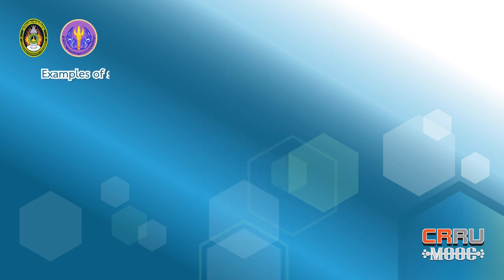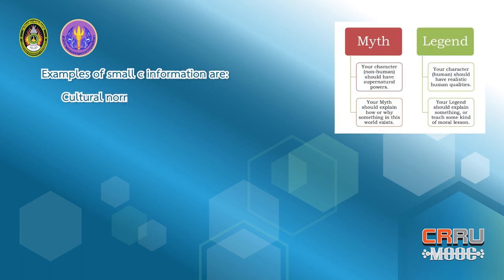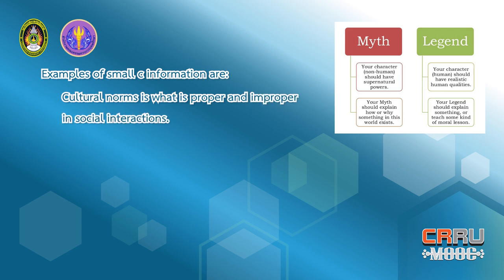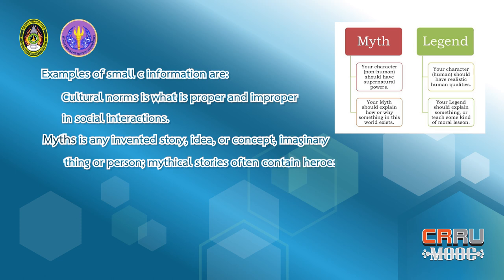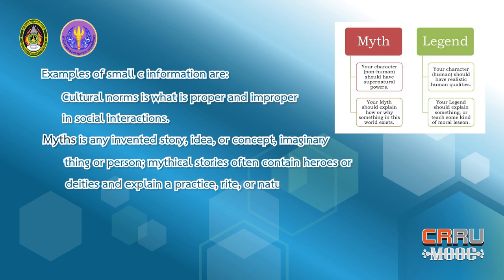Examples of small-c information are the cultural norm. The cultural norm is what is proper and improper in social interactions. And myth is any inventor's story, idea, or concept — imaginary things or person. Mythical stories often contain heroes or deities and explain a practiced rite or natural phenomenon.